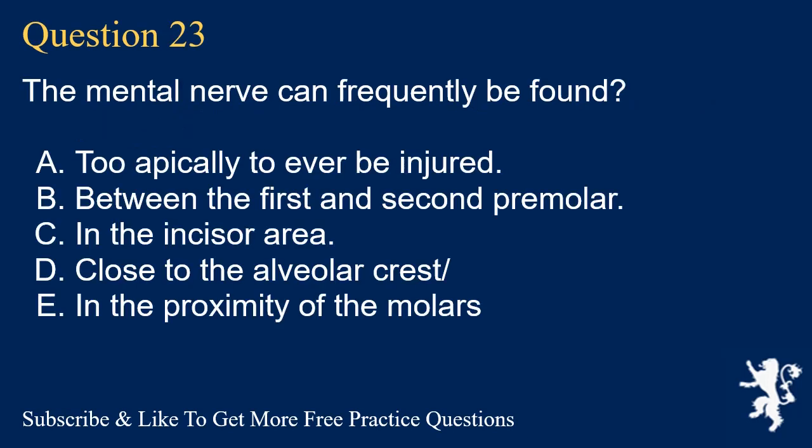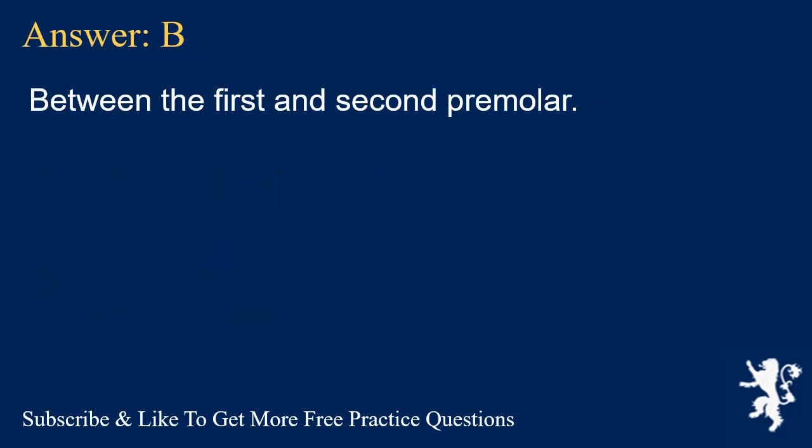Question 23. The mental nerve can frequently be found? A. Too apically to ever be injured. B. Between the first and second premolar. C. In the incisor area. D. Close to the alveolar crest. E. In the proximity of the molars. Answer: B. Between the first and second premolar.